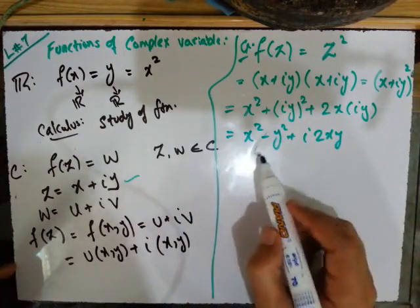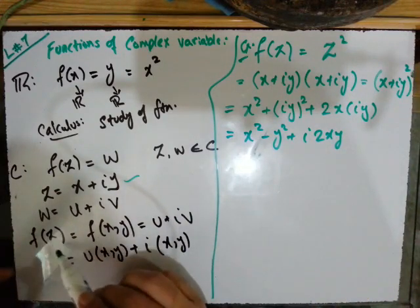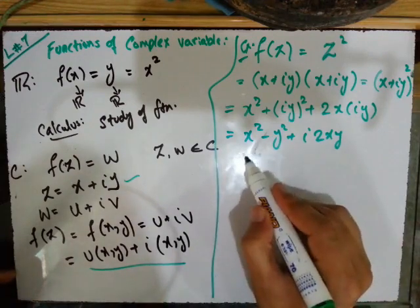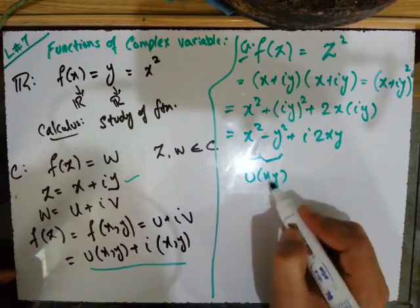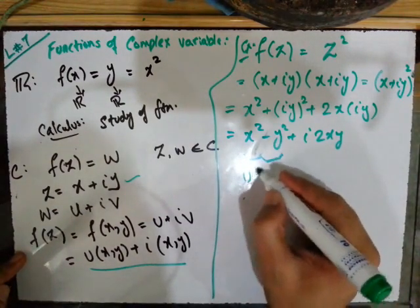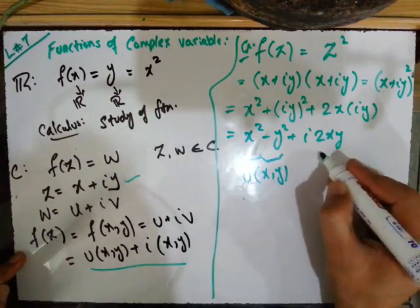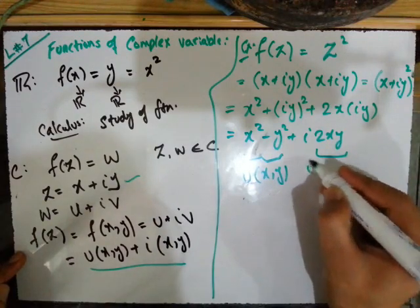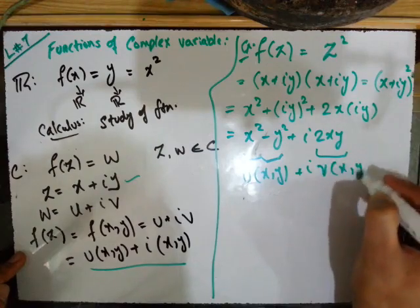So in this format of the function of a complex number, this is basically u — which is a function of x and y, that is u = x² − y². And this is v — which is also a function of x and y, that is v = 2xy.